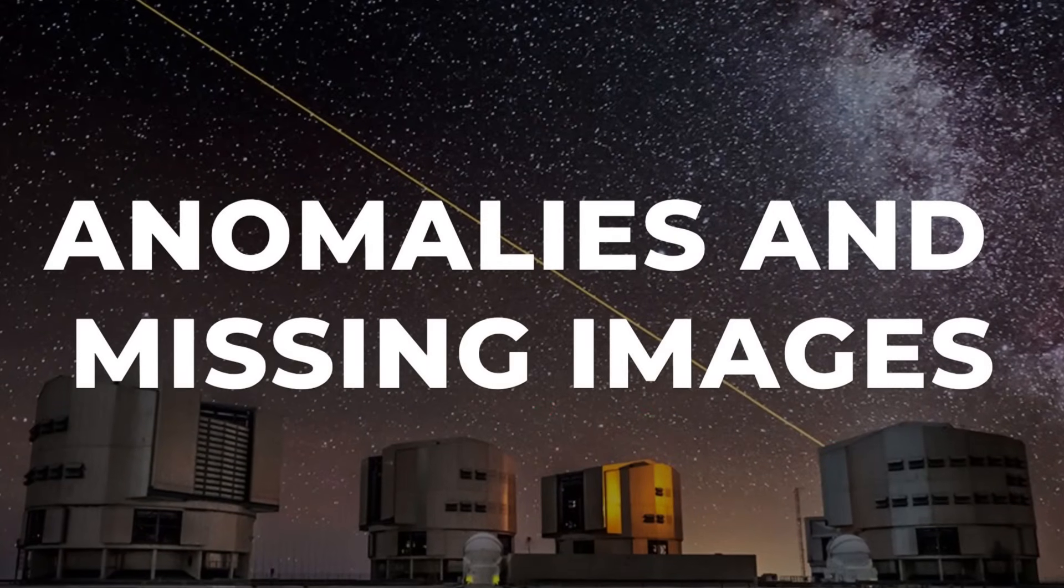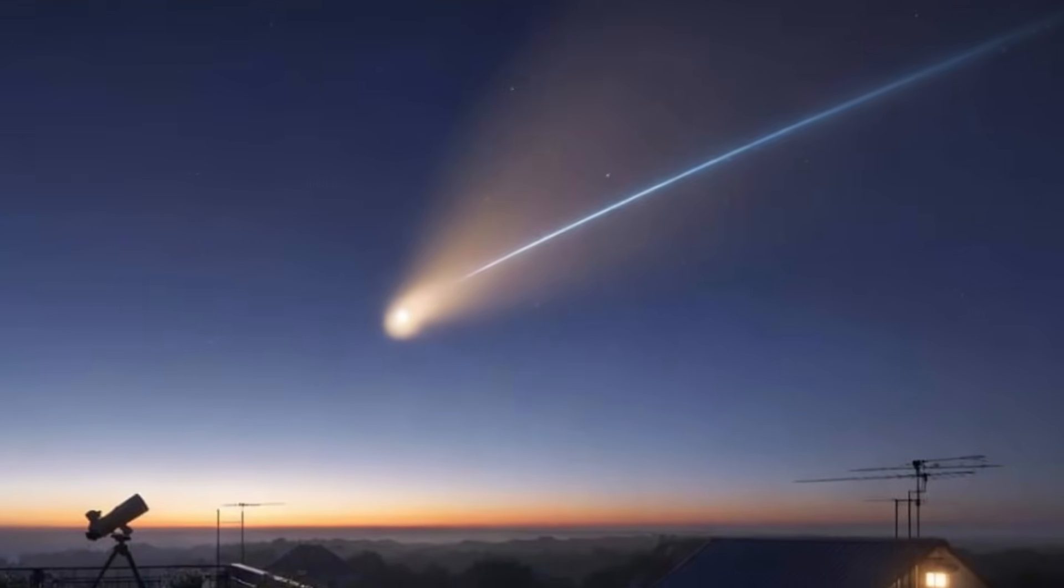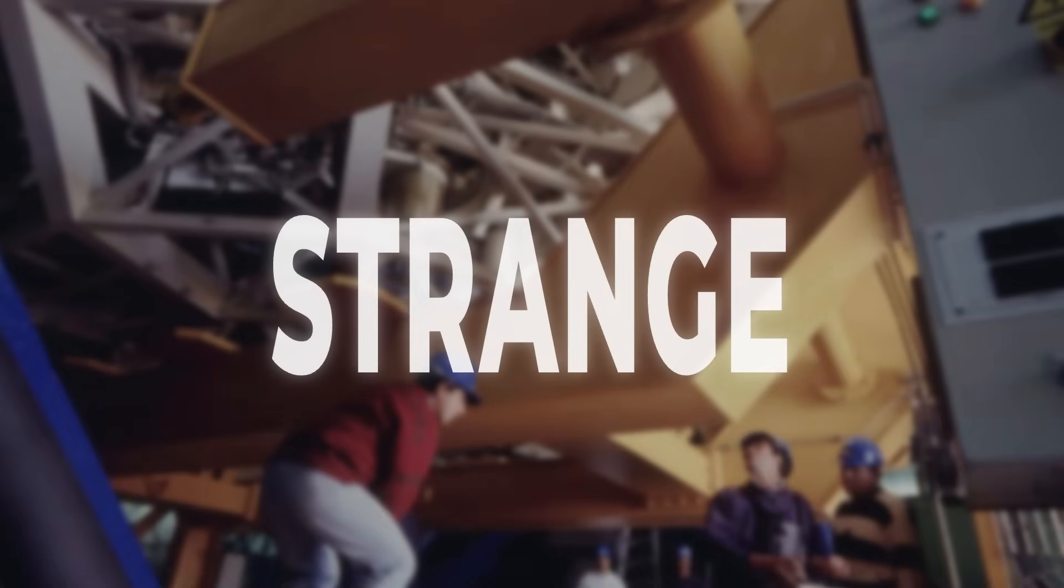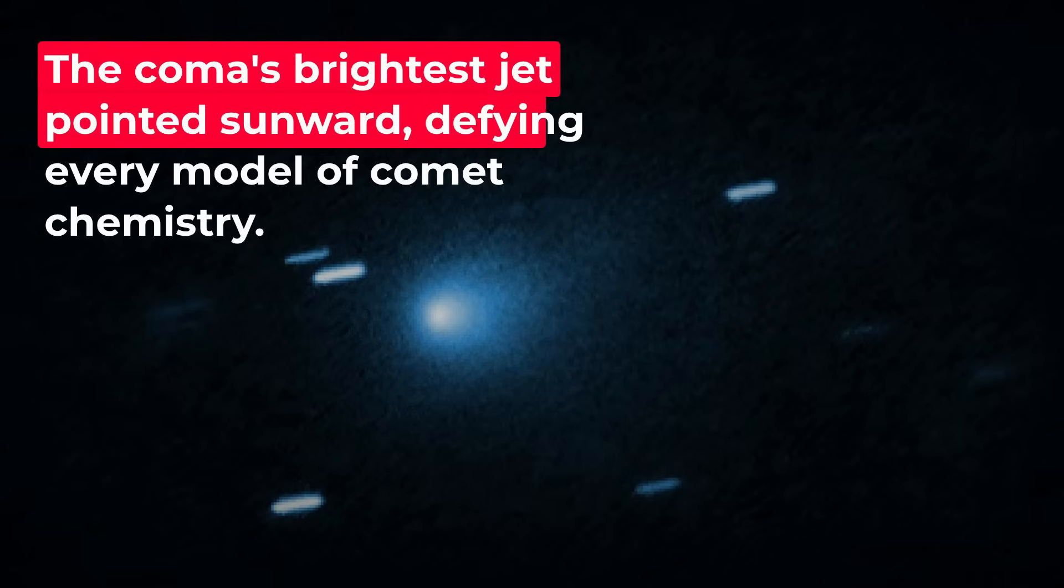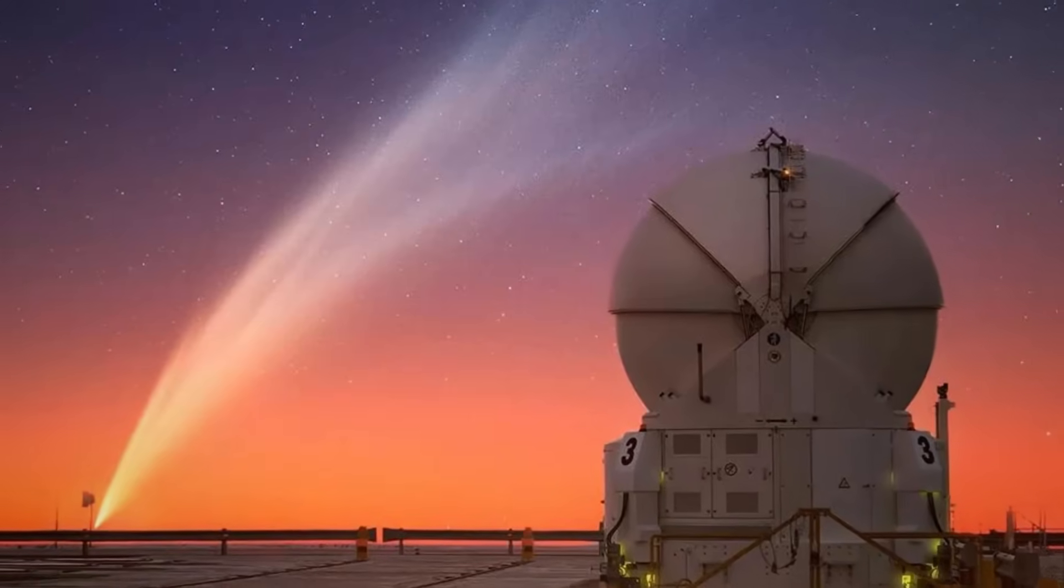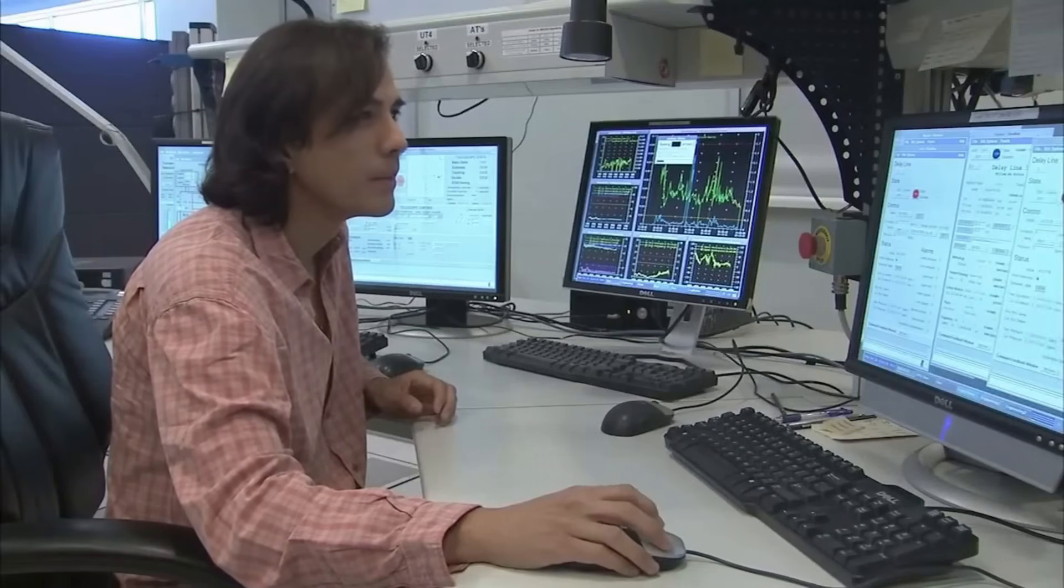Spectrographs at the European Southern Observatory and Keck began gathering light from 3i-Atlas just days after its discovery. Instead of the classic cometary signature, a bright tail streaming away from the sun, astronomers noticed something odd. The brightest part of the coma glowed forward, toward the sun, a pattern that defied standard models of how ice and dust vaporize in sunlight. This forward-facing glow became a puzzle in itself, but the real surprise came from the chemical fingerprints hidden in the light.